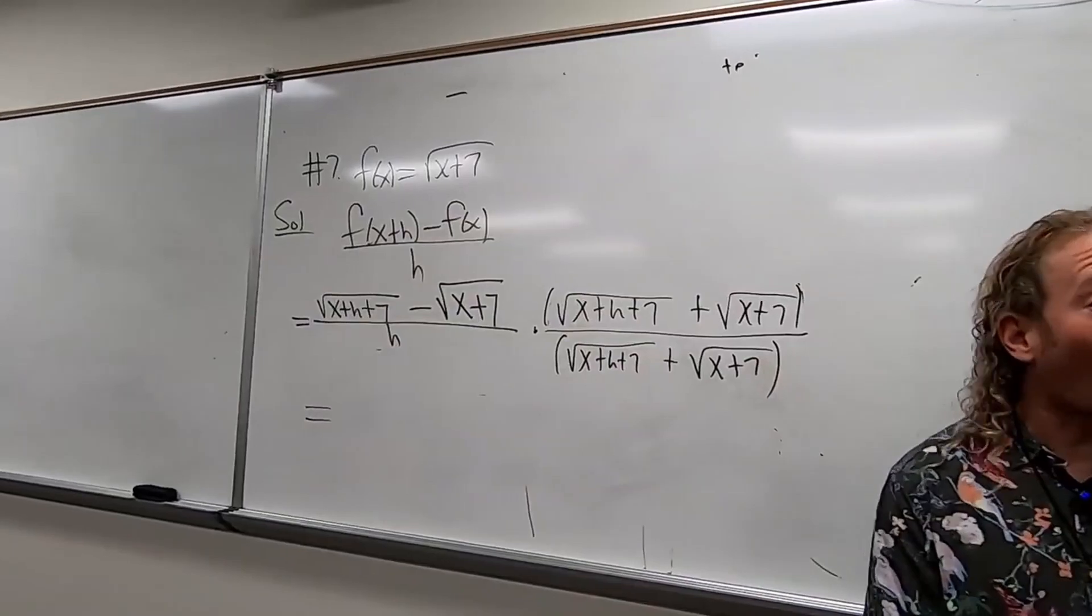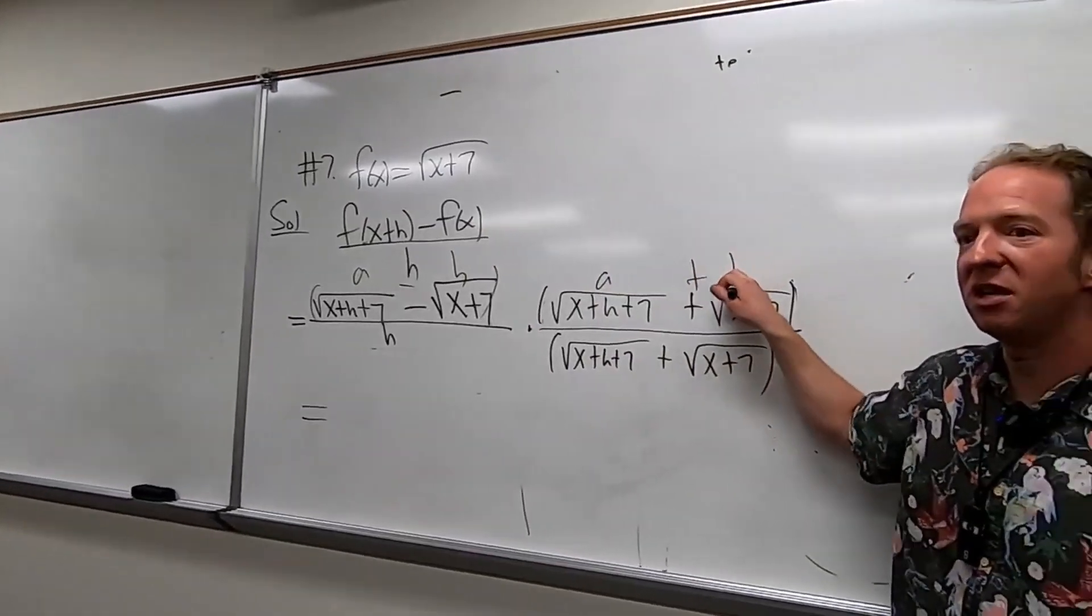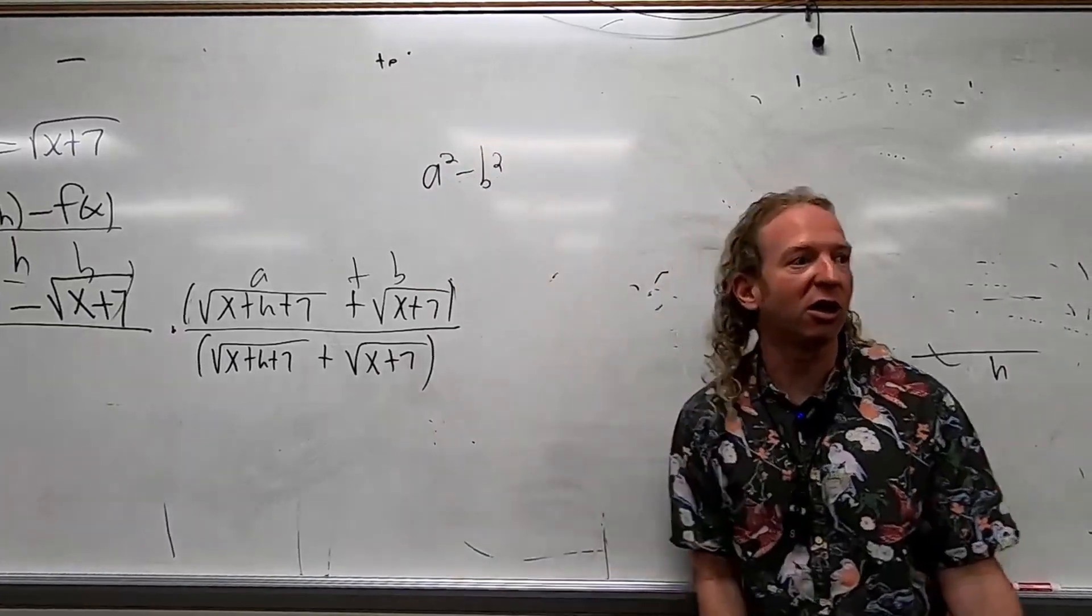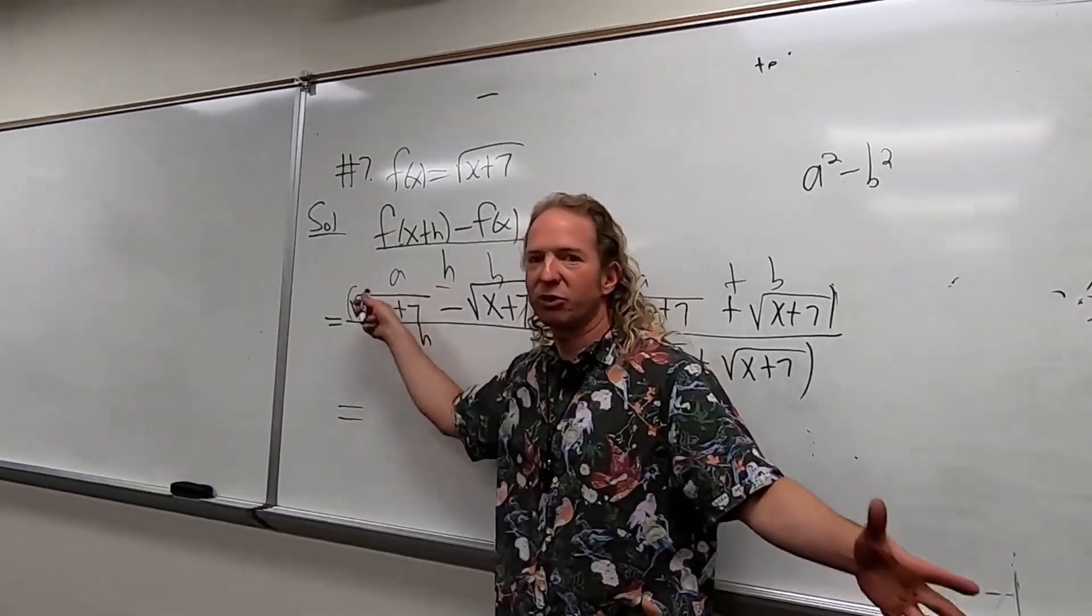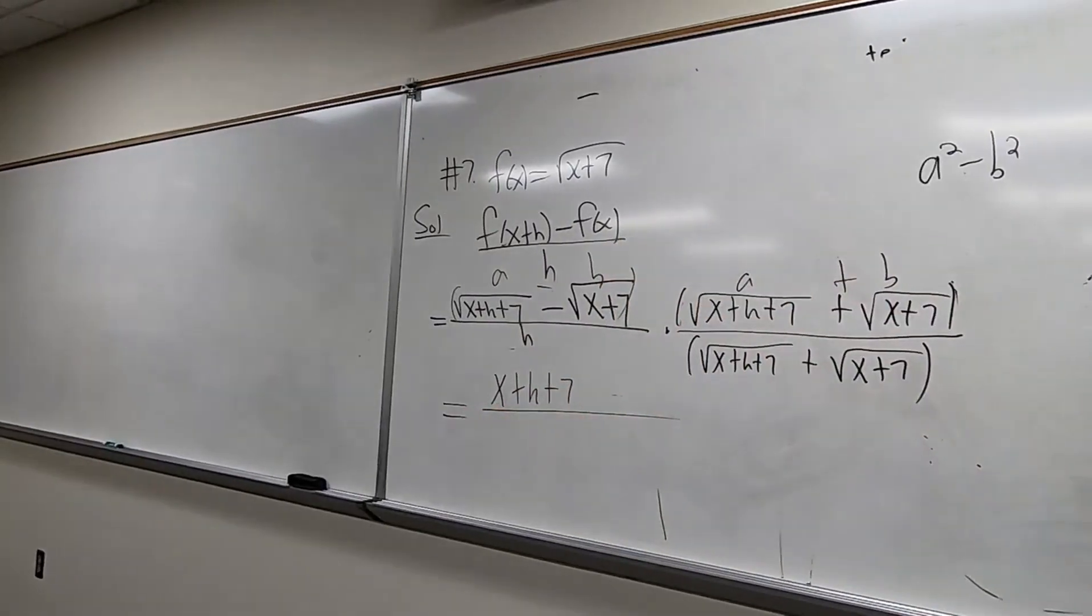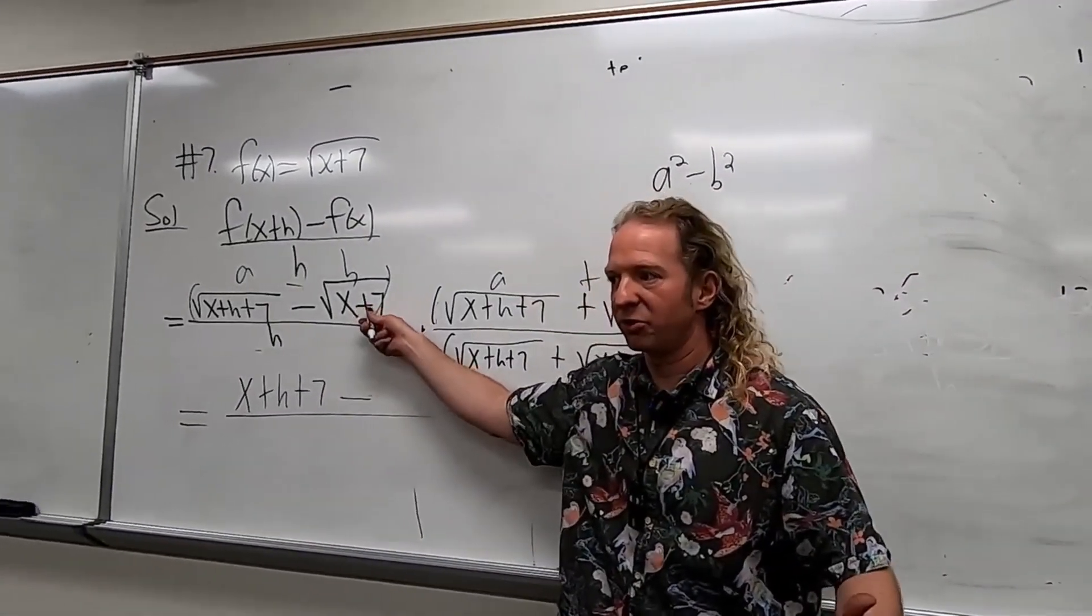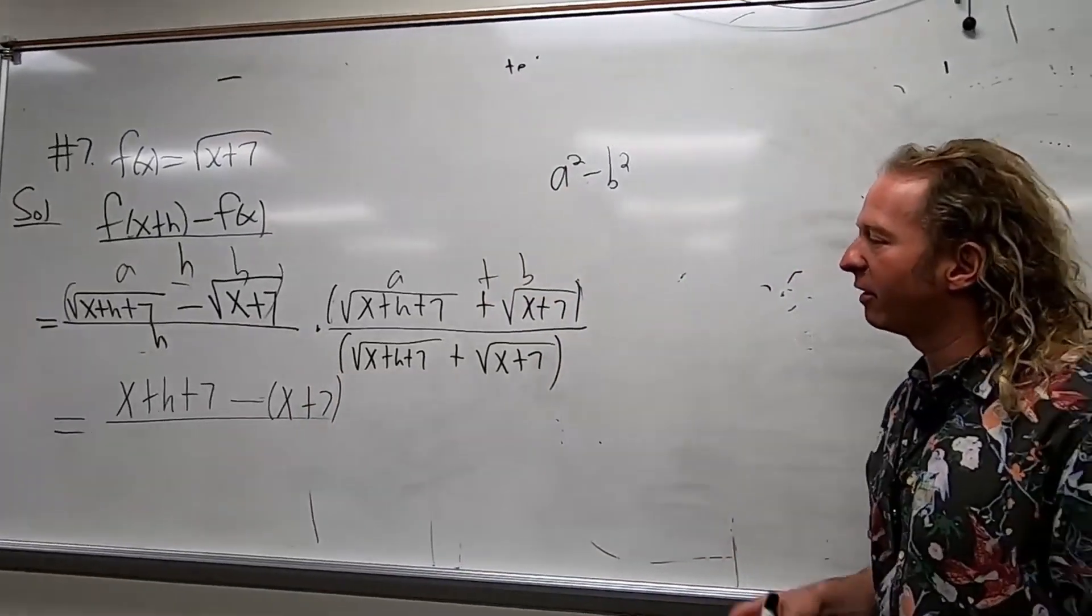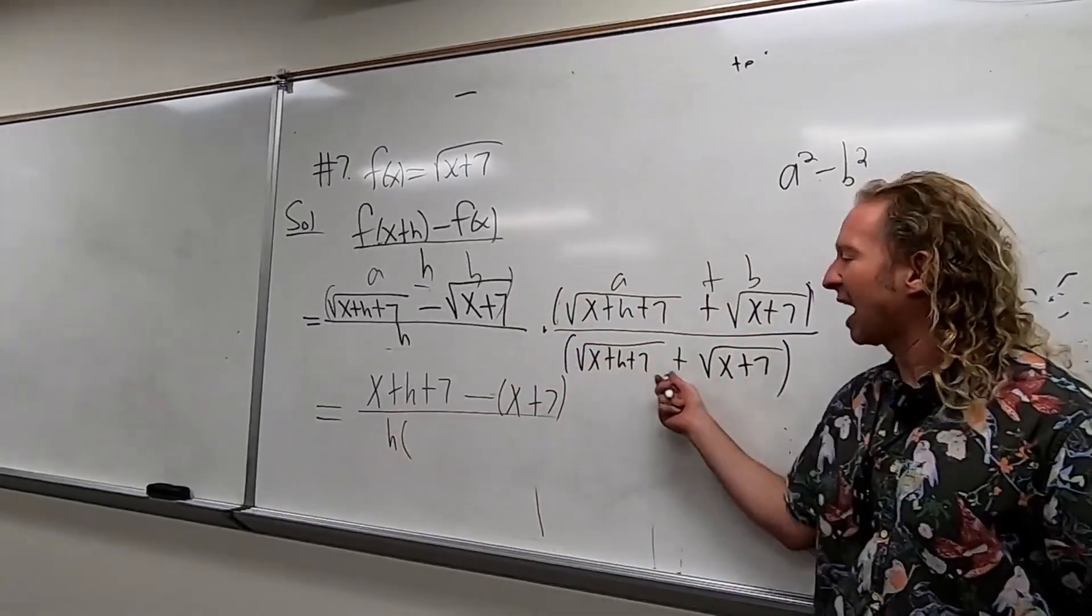There is a formula, right? a minus b times a plus b equals a squared minus b squared. It's a difference of squares, super useful. So you square this piece: x plus h plus 7, minus x plus 7. I have a bad habit of messing up here. I've forgotten this h piece before. It's happened to me when I take the test, because I take the test with you—I need the answers.